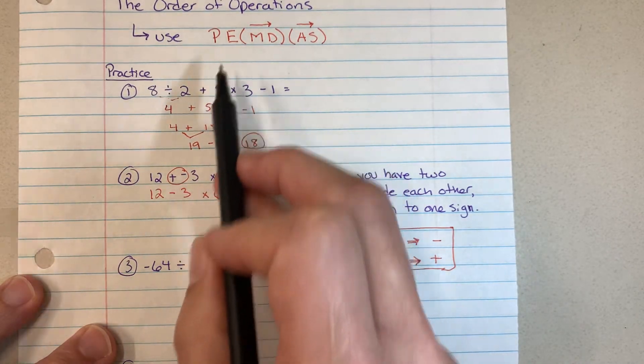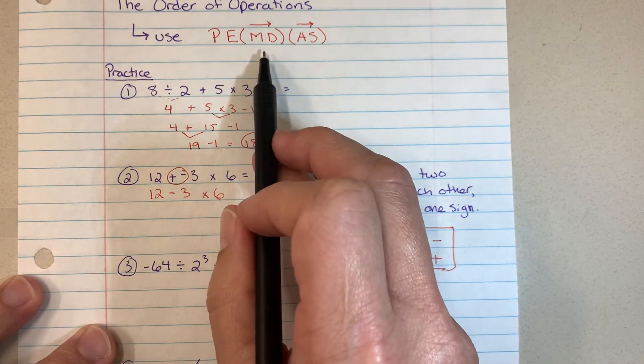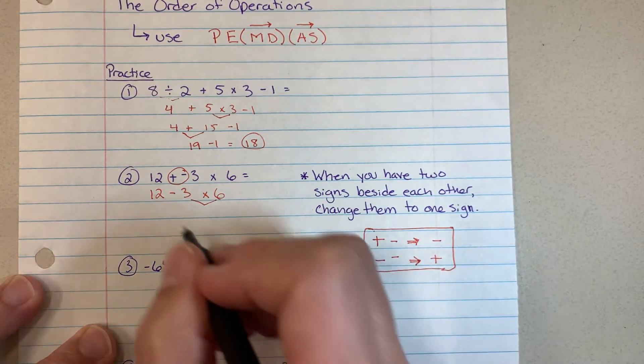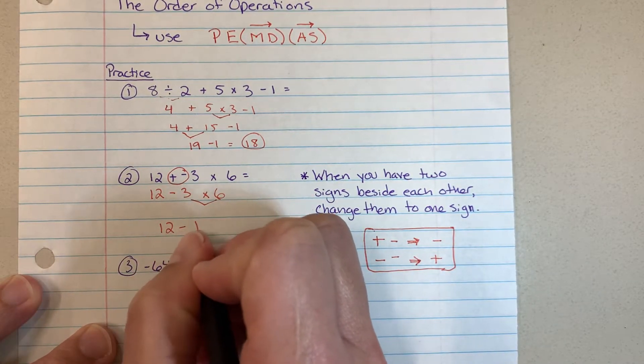So parentheses? No. Exponents? No. Multiplication and division? Yes. Right here. So we work 3 times 6 first, and that gives us 18.